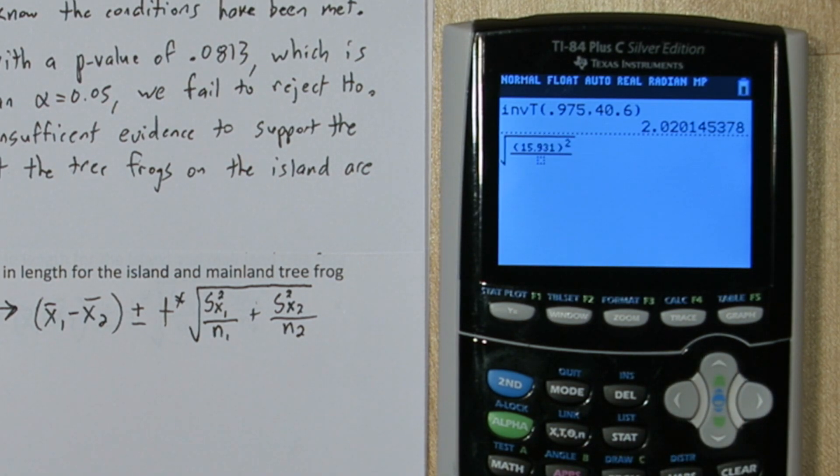And that's being divided by the sample size, 32. Now if I press over and I input another fraction, I can type everything for the mainland population.